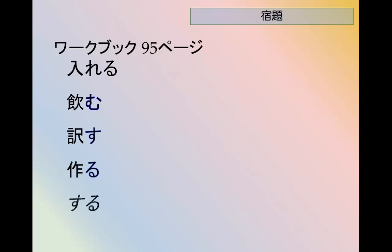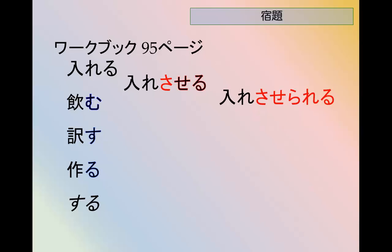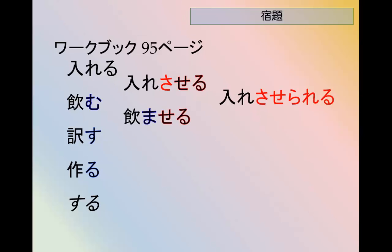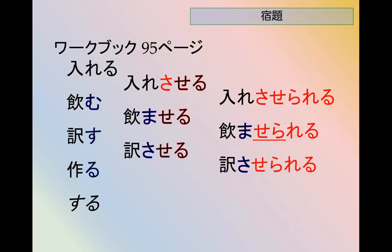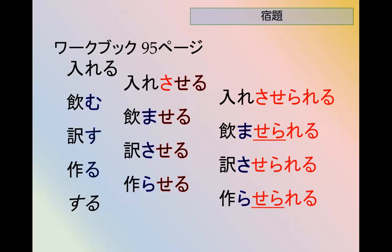入れる is a ru-verb, so: 入れ-saseru → 入れ-saserareru. Nomu → nomaseru → nomaserareru. Yakusu → yakusaseru → yakusaserareru. Tsukuru → tsukuraseru → tsukuraserareru, or tsukurasareru. Suru is irregular: saseru → saserareru. Kuru is also irregular: kosaseru → kosaserareru. Ukeru is a ru-verb: ukesaseru → ukesaserareru.